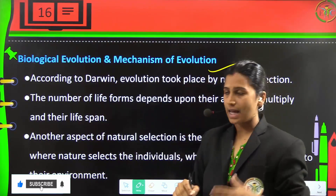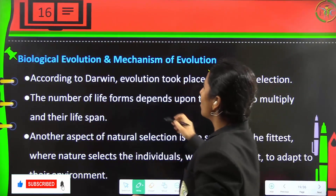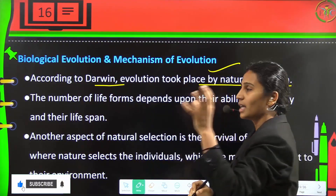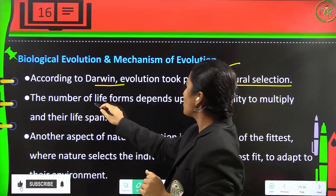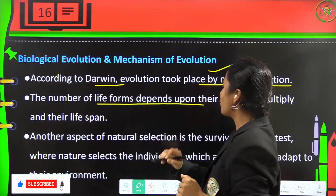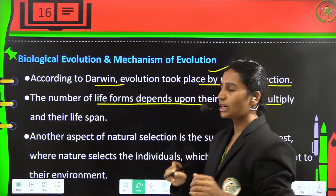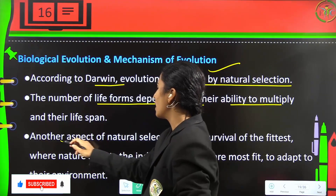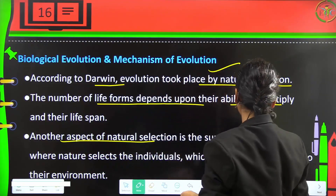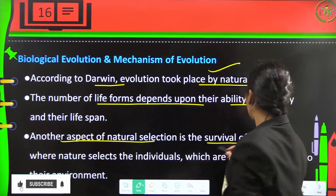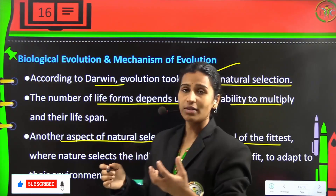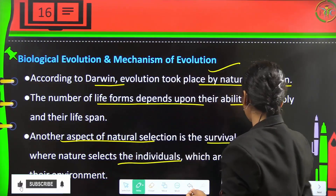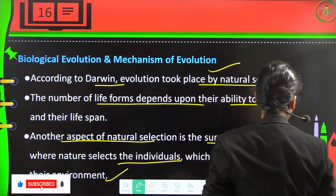According to Darwin, biological evolution took place by natural selection — it was happening naturally. The number of life forms depends on their ability to multiply and their lifespan to survive. Another aspect of natural selection is survival of the fittest, wherein nature selects the individuals most fit to adapt to the environment.